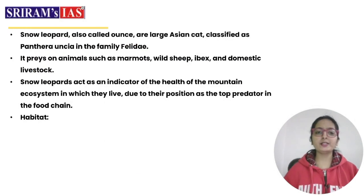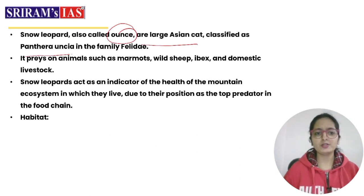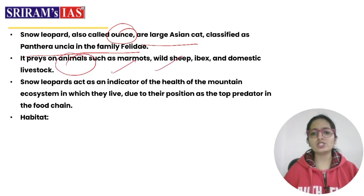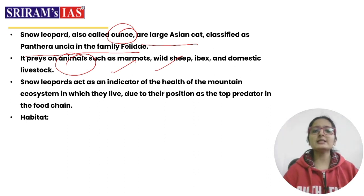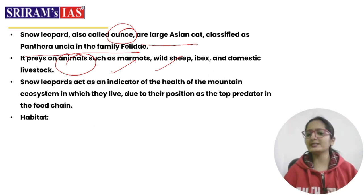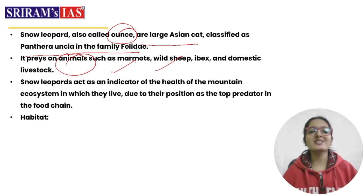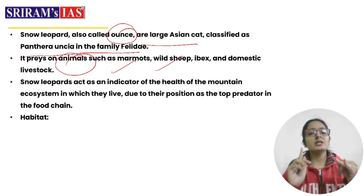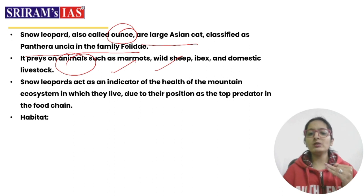The snow leopard, also called 'umts,' is a large Asian cat classified as Panthera uncia in the family Felidae. It preys on animals like marmots, wild sheep, and domestic livestock. This zoological park in Darjeeling has successfully bred 77 snow leopards since the 1980s. Snow leopards are found in the mountains of Central and South Asia.